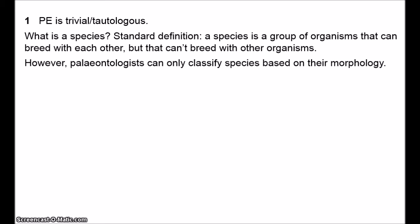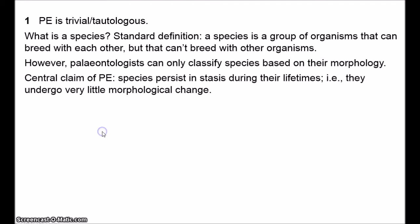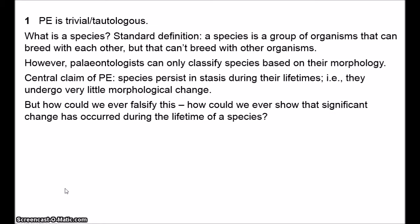Levington and Simon use this point to present the tautology problem. A central claim of punctuated equilibrium is that species exist in stasis during their lifetimes — by stasis we mean they undergo very little morphological change. The morphology of a species at its extinction is pretty much the same as it was at its birth. But in paleontology, species are distinguished based on their morphological features. We class two specimens as different species just in case their morphologies are different.